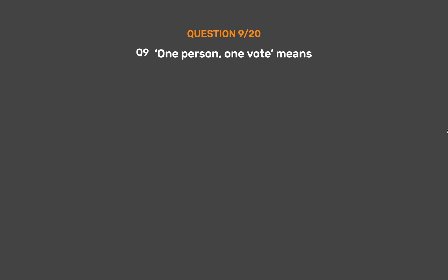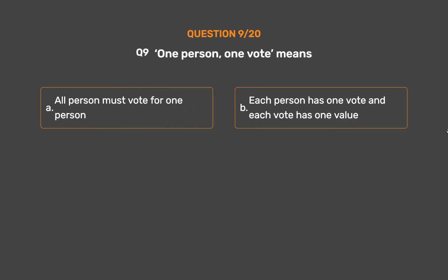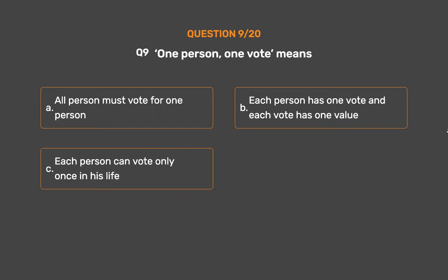Question number 9. One person, one vote means — Option A: All persons must vote for one person. Option B: Each person has one vote and each vote has one value. Option C: Each person can vote only once in his life. Option D: None of the above.